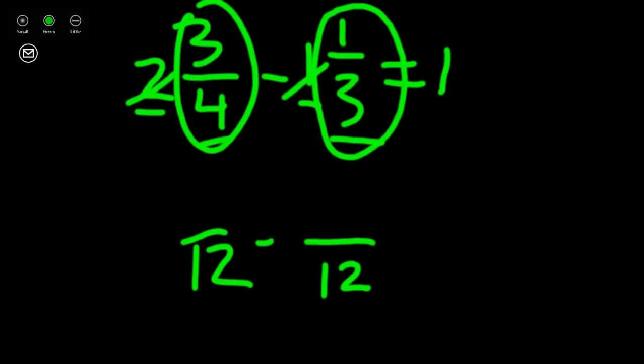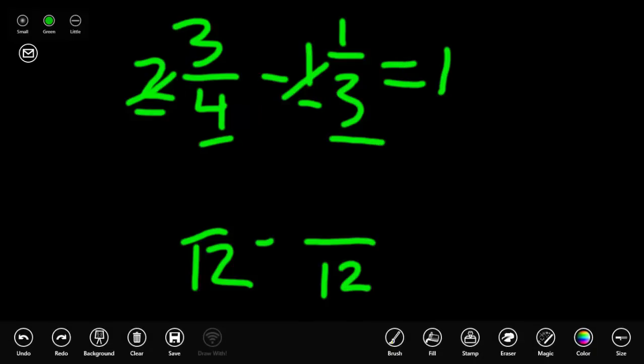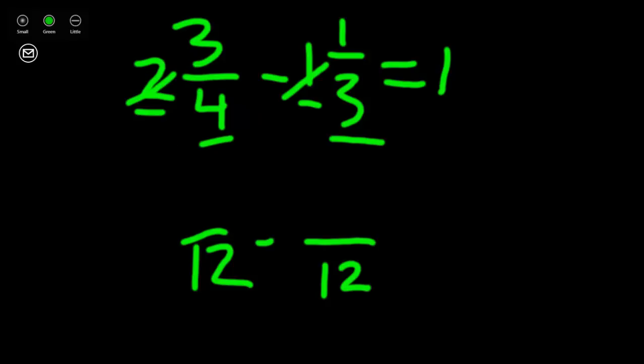What do we multiply by four to get to twelve? Multiply by three. We need to do the same to our top number. Three times three is nine. Nine-twelfths is equivalent to three-fourths.